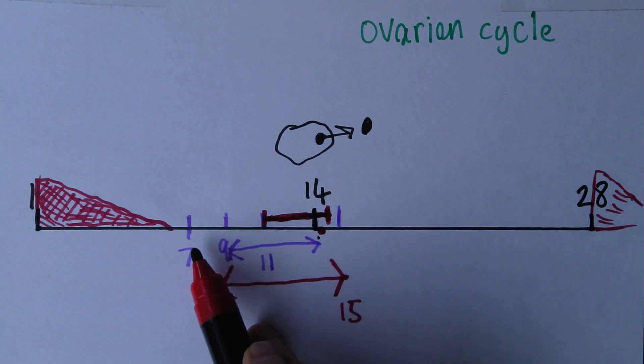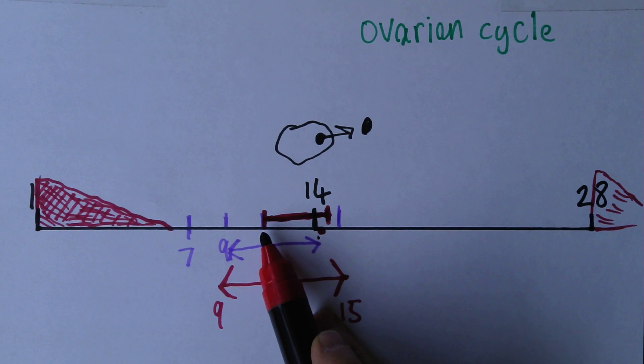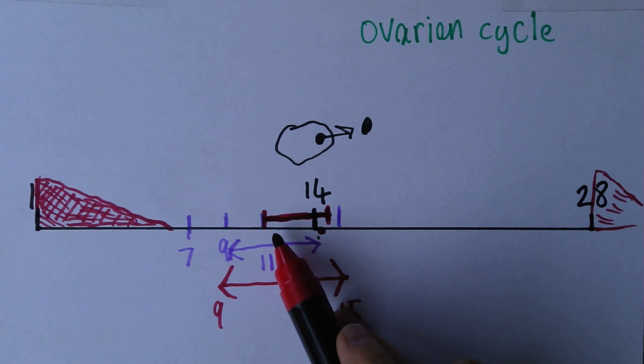Sometimes in the days before ovulation the temperature will go down a little bit and then the temperature will rise a little bit, not much, more than half a degree centigrade, in fact not even that, 0.2 or 0.3 of a degree centigrade. So there can be a slight blip in temperature associated with ovulation that can be observed with accurate recordings of temperature.